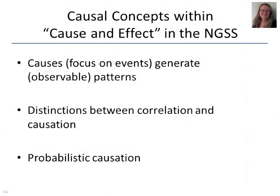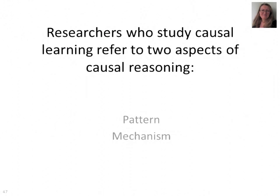There's three really big ideas in here. The idea that causes generate observable patterns, the distinctions between correlation and causation, and probabilistic causation. And these introduce different issues at different ages. So let's look at each one.